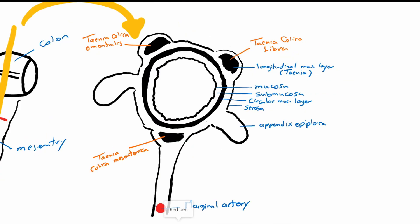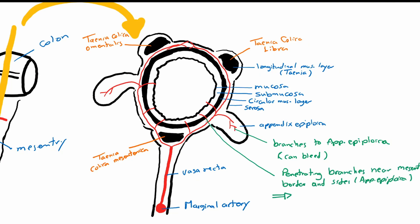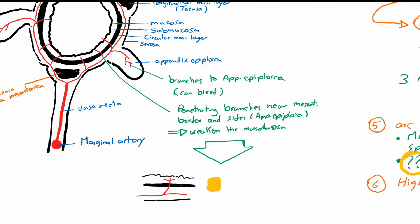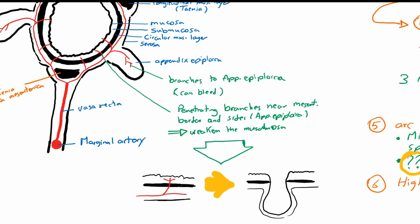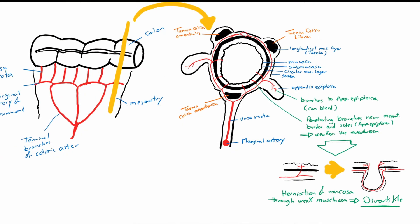In the mesentery just below the colon, the marginal artery of Drummond gives off the vasa recta to supply the colon. The vasa recta have two branches on the circumference of the colon, with branches to the appendices epiploicae, and these branches pierce the muscular layer to reach the mucosa. The muscularis, which is pierced by these branches, is slightly weakened, and this can lead to bulging of the mucosa outwards in cases of increased intracolonic pressure — for example by persistent constipation. This herniation of the mucosa and submucosa through a weak part of the muscularis is commonly known as diverticular disease, which will be discussed in detail in the next episode.